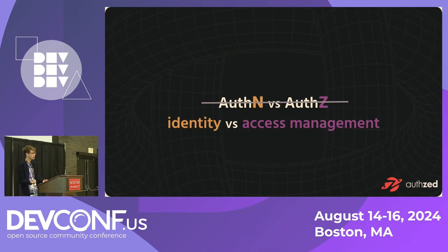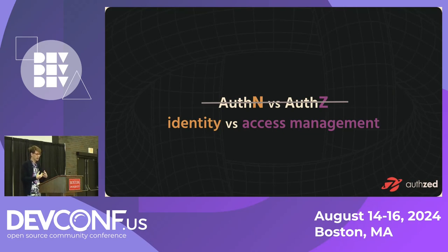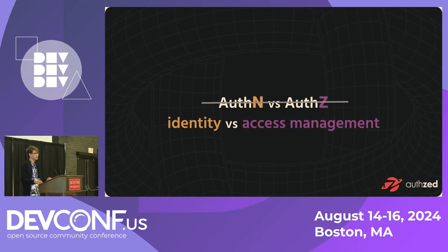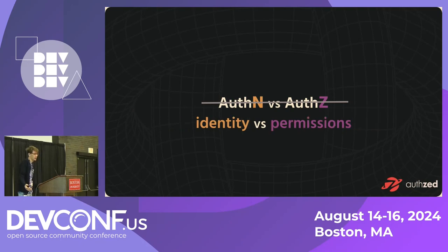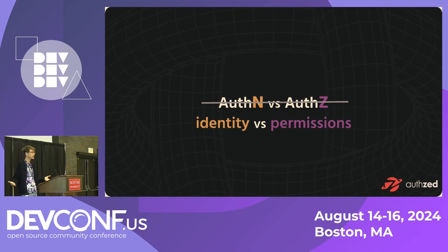Because these two concepts together form the foundation of application security, they're often discussed together. You might have heard of the acronym IAM, which stands for Identity and Access Management. When you're having these technical conversations, it's really easy to misspeak, change the subject implicitly, or use one of these vague terms — and that can cause confusion regularly, for beginners and experts alike. I tend to prefer the terms 'identity' and 'permissions,' which my company uses instead.